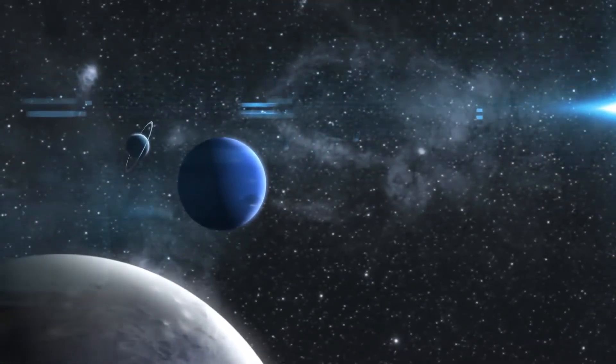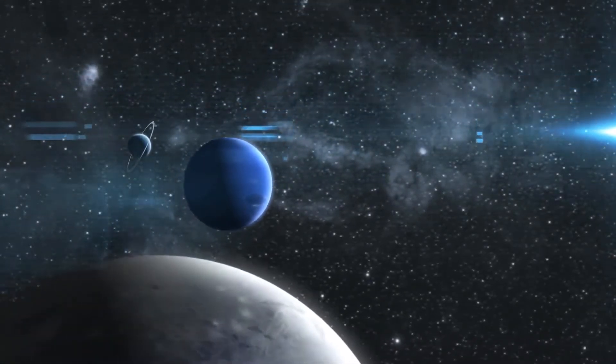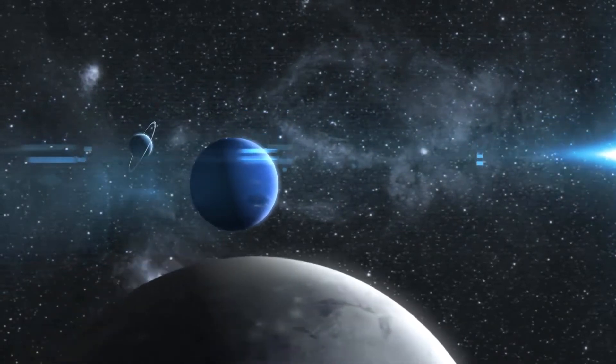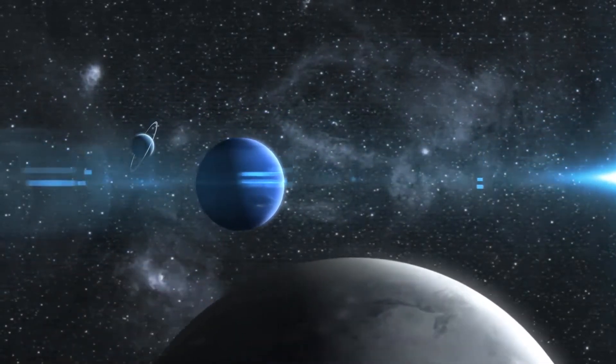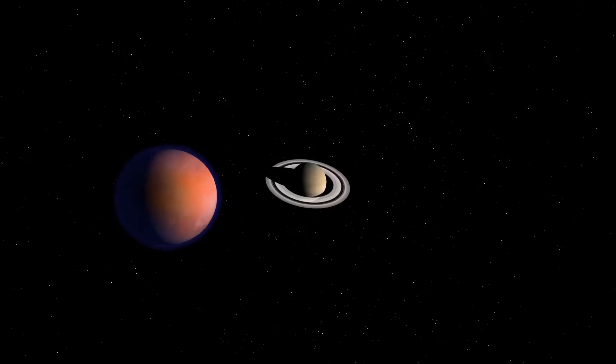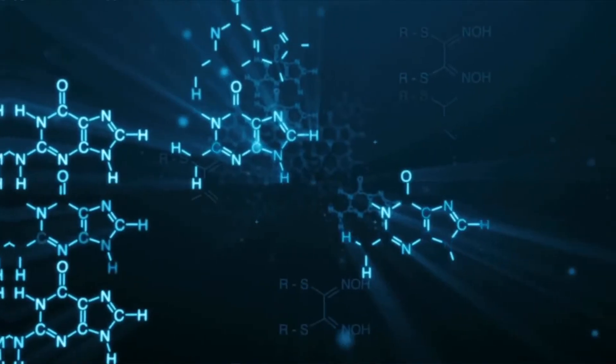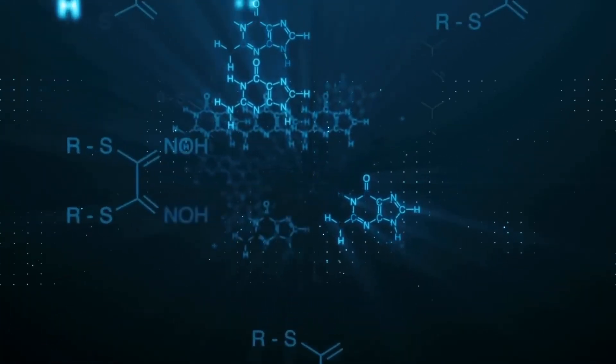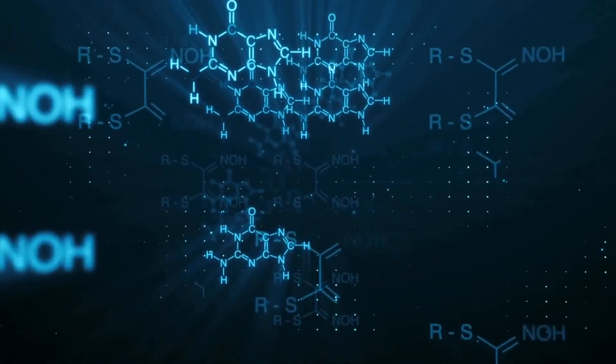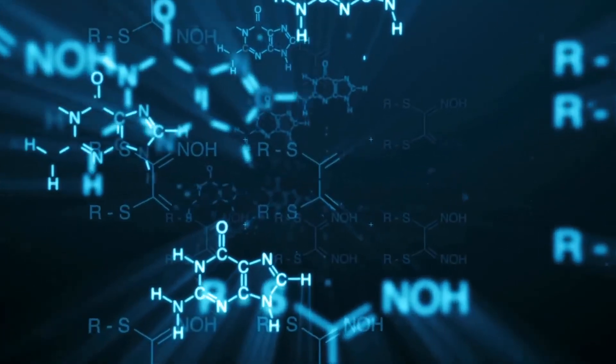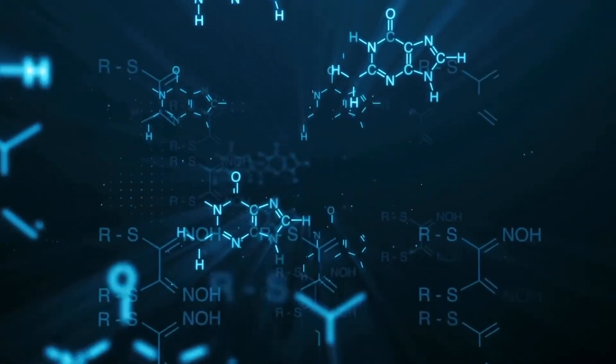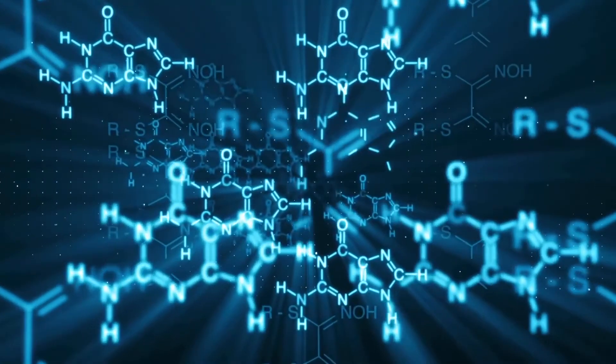Kepler-11e is most likely a gas giant, similar to Neptune. It also has a density that is half of that of pure water at standard temperature and pressure and less than that of Saturn, the least dense planet within the solar system. The low density of Kepler-11e can probably be attributed to a large hydrogen and helium atmosphere.